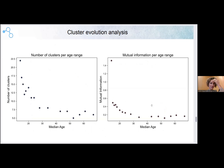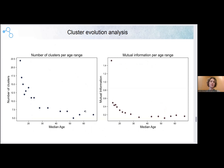Diving deeper into cluster characteristics: the number of clusters decreases with age, and also the mutual information between different networks also decreases. That means that during the aging process, the gene regulatory network loses its specialization. And the gene functions that are enriched in different clusters do change over time.